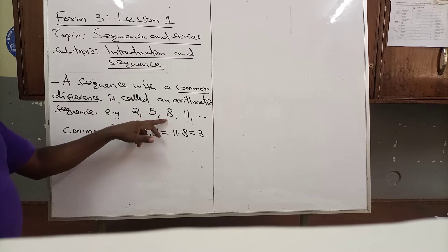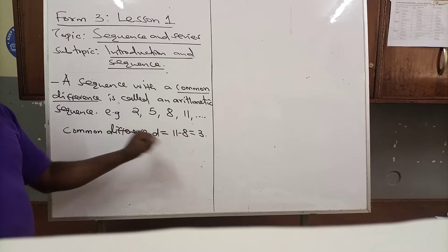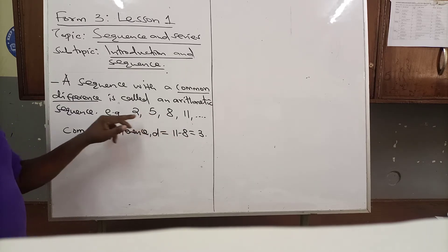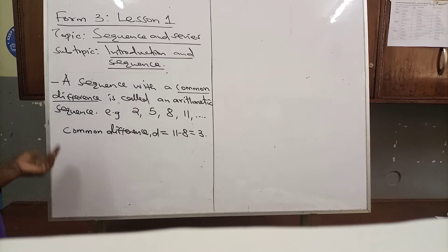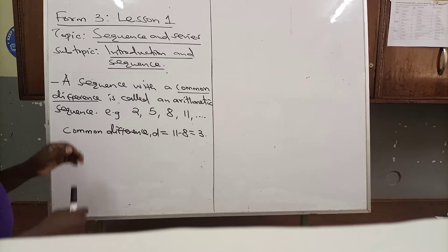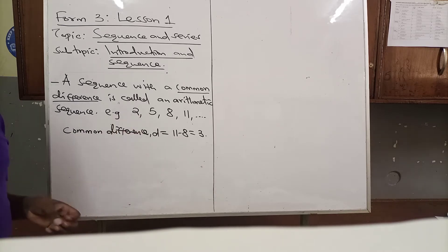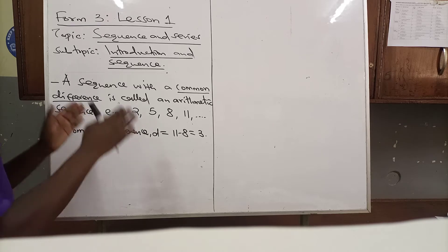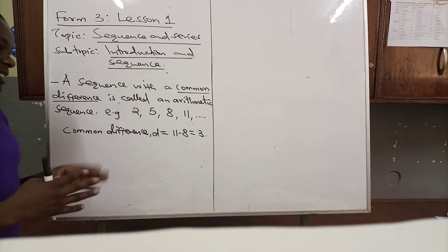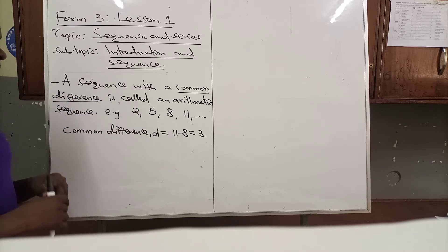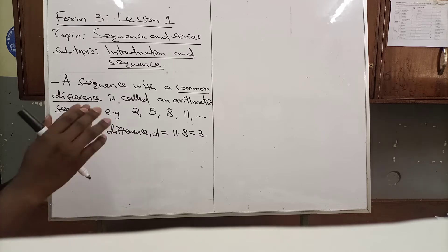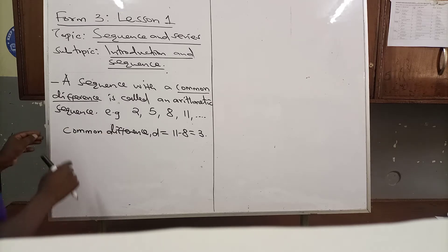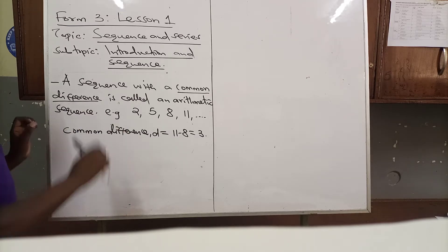The common difference is obtained by taking 11 minus 8, which gives 3. If you take 8 minus 5 you get 3. 5 minus 2 you get 3. So as you can see, 3 is common throughout. If you take any two consecutive terms and find their difference, what you obtain is called the common difference.